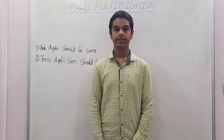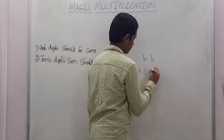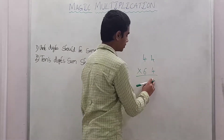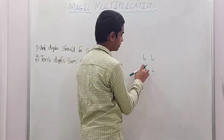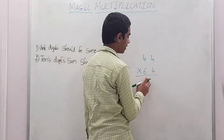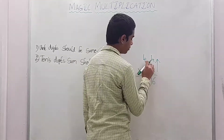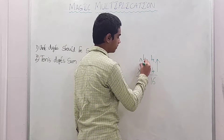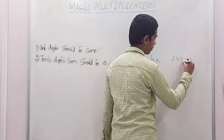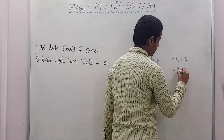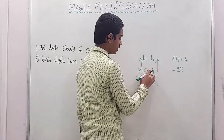Let's take another example: 44 into 64. First rule, unit place digit should be same — satisfied. Second rule, 10th place digit sum should be 10: 6 plus 4 equals 10 — satisfied. First step: multiply unit place digit numbers — 4 into 4 is 16. Come to the 10th place and multiply: 6 into 4 is 24, plus unit place digit down number 4: 24 plus 4 is 28. So write 28. The final answer: 44 into 64 is 2816.